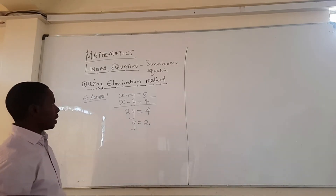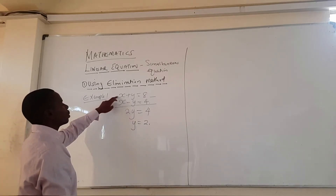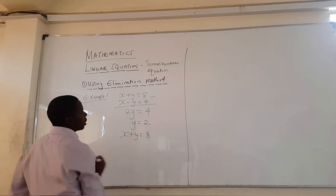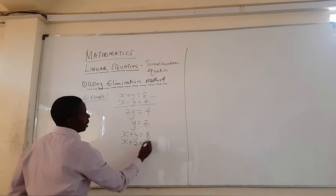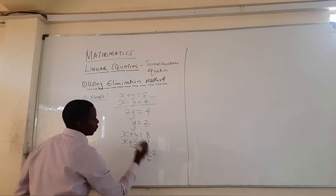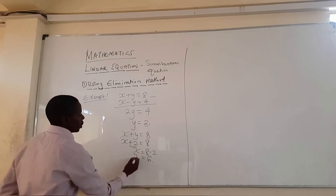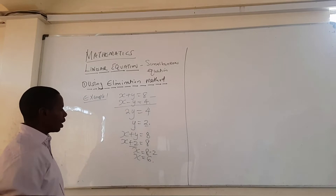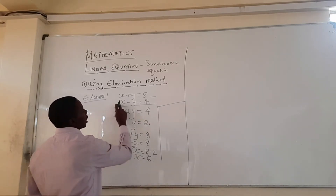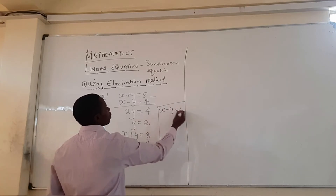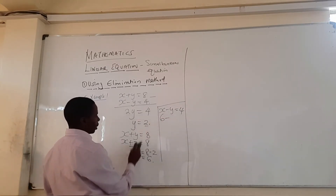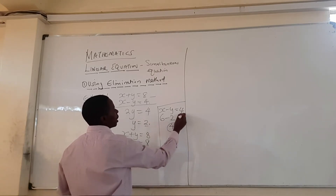I have the value of y as 2. Now I can use one of the equations — equation 1 — to get the value of x. Taking equation 1: x plus y equals 8, and y is 2, so x plus 2 equals 8. Therefore x equals 8 minus 2, which is 6. So x is 6 and y is 2. To check, using equation 2: x minus y equals 4, so 6 minus 2 gives 4 — my working is correct.